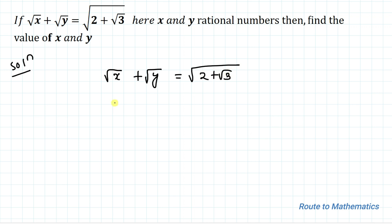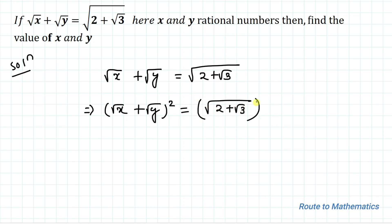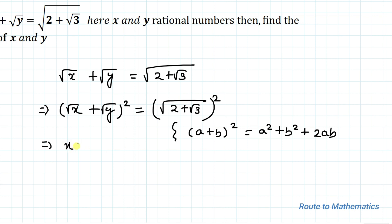Whenever we have radicals in the equation, the first thing is to remove the root. For that, we'll square both sides of the equation. This gives us (√x + √y)² = (√(2 + √3))². Considering √x as a and √y as b, we use the algebraic identity (a + b)² = a² + b² + 2ab, so we get x + y + 2√(xy).